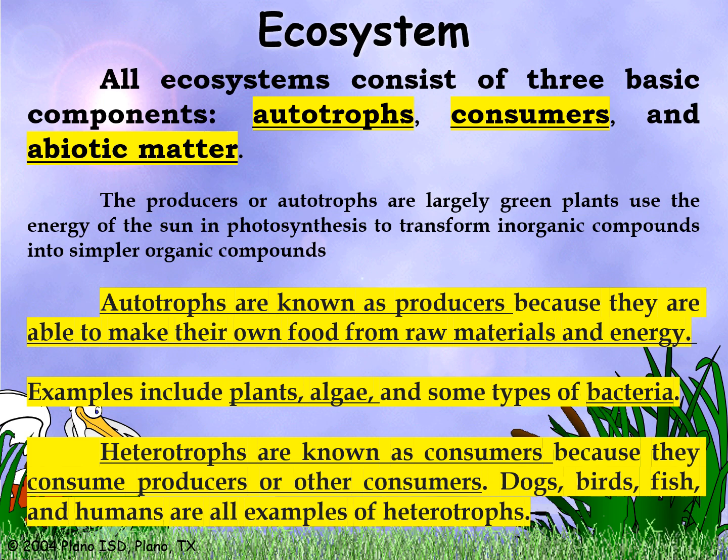Heterotrophs are consumers, like humans, because they consume producers or other organisms. Examples include dogs, birds, fish, and humans — all examples of heterotrophs.